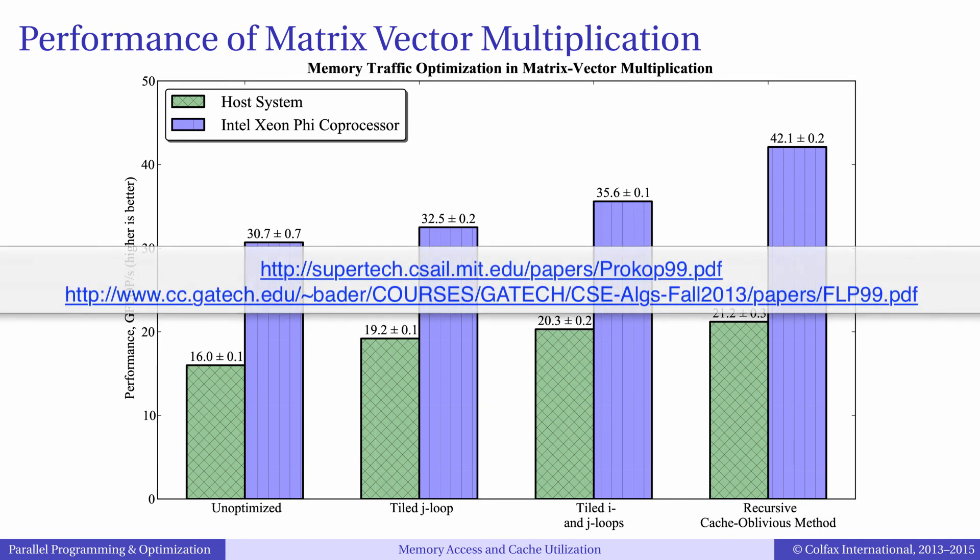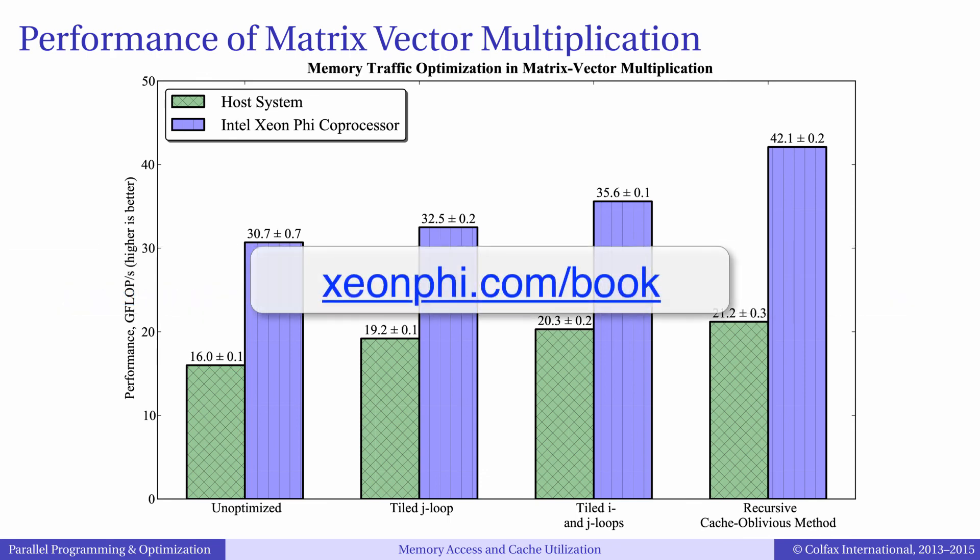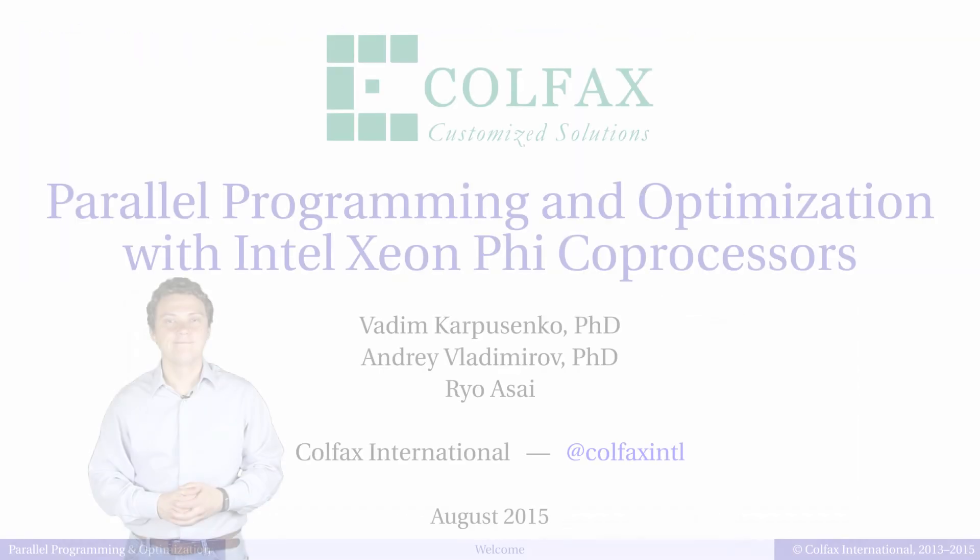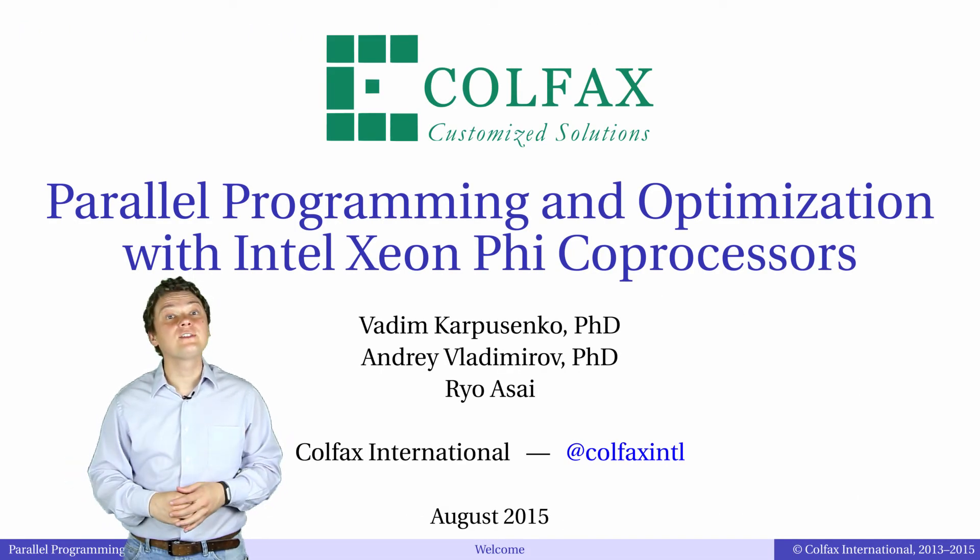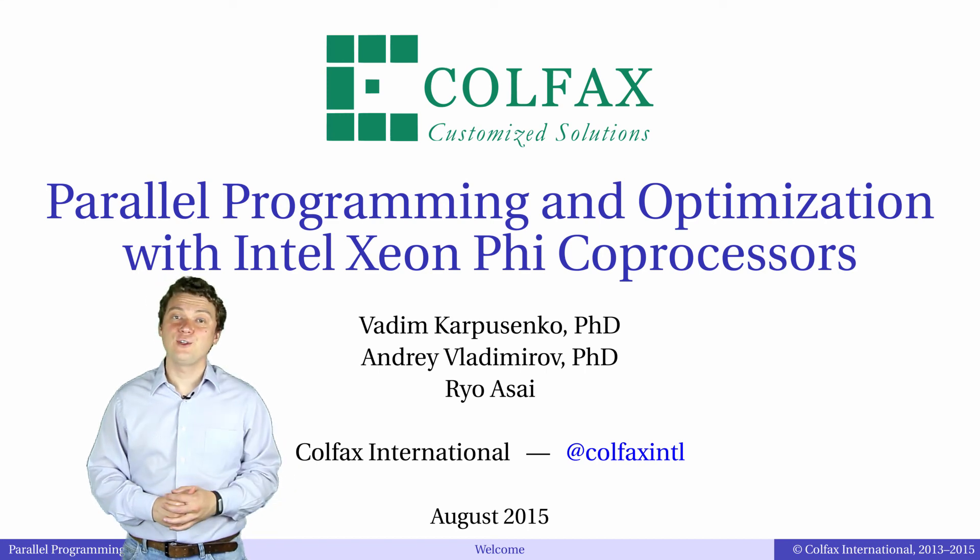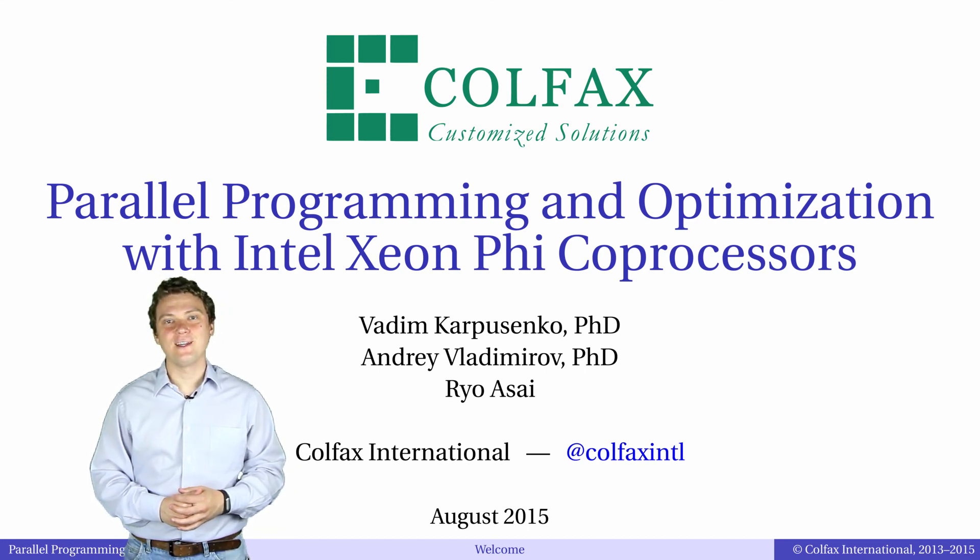For more information about cache oblivious algorithms see those papers. In our book we discuss additional techniques for memory traffic optimization including first-touch allocation and loop fusion. If you have any questions leave them in the comment section below the video. Thank you for tuning in and I really hope to see you in the next episode.